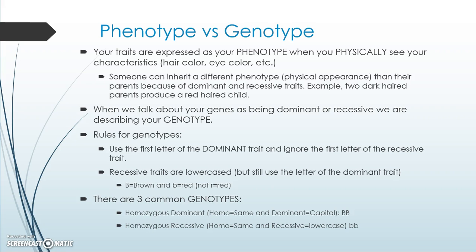That brings us to genotype and phenotype — two terms that are often confused. Phenotype refers to the physical appearance of a trait. For example, your eye color or hair color. Instead of saying 'dominant or recessive phenotype,' we would say 'you have black hair' or 'you have red hair.' An offspring can inherit recessive traits and show a physical appearance different from either parent — this is an example of a recessive phenotype being expressed.